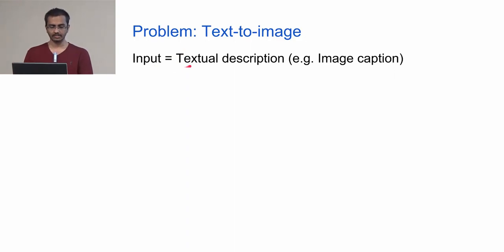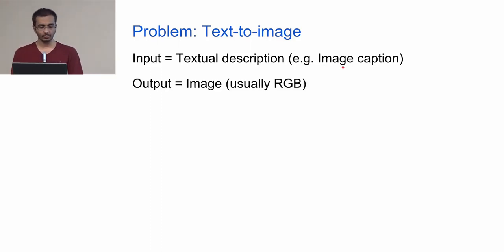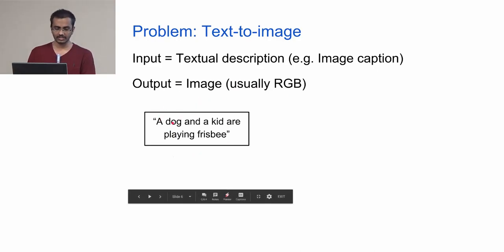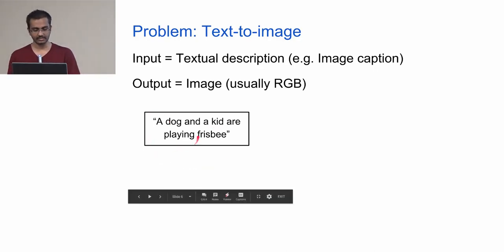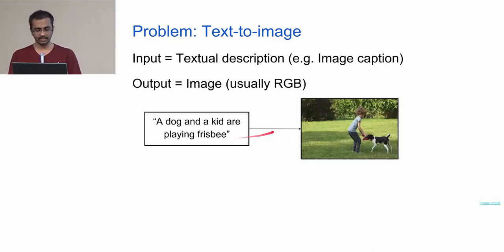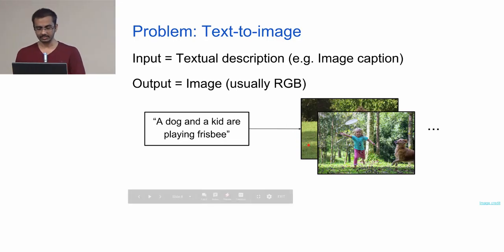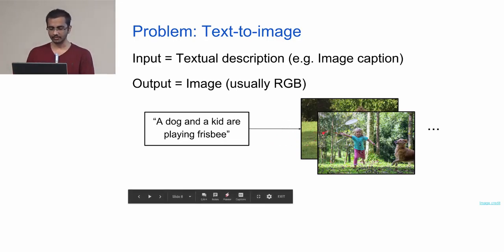As you would expect, the input is a textual description — it can be something like an image caption or some kind of description which basically tells you about the components of the image. The output is an image which is usually RGB. We as humans are naturally gifted with the capability of imagination; when you see a sentence, you are able to visualize a scene without ever actually having to see that precise scene. And that is what we want our models to do. There are more than one correct answers to this problem, so even generating any one of those images is fine.